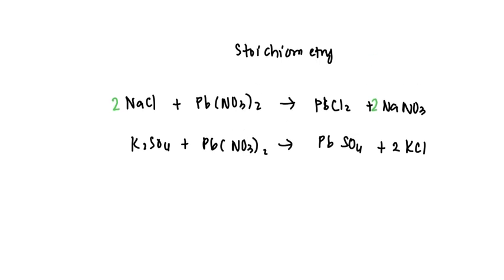From here we find that for two moles of NaCl, one mole of the precipitate PbCl2 is formed, and for every one mole of K2SO4, one mole of the PbSO4 precipitate is formed.